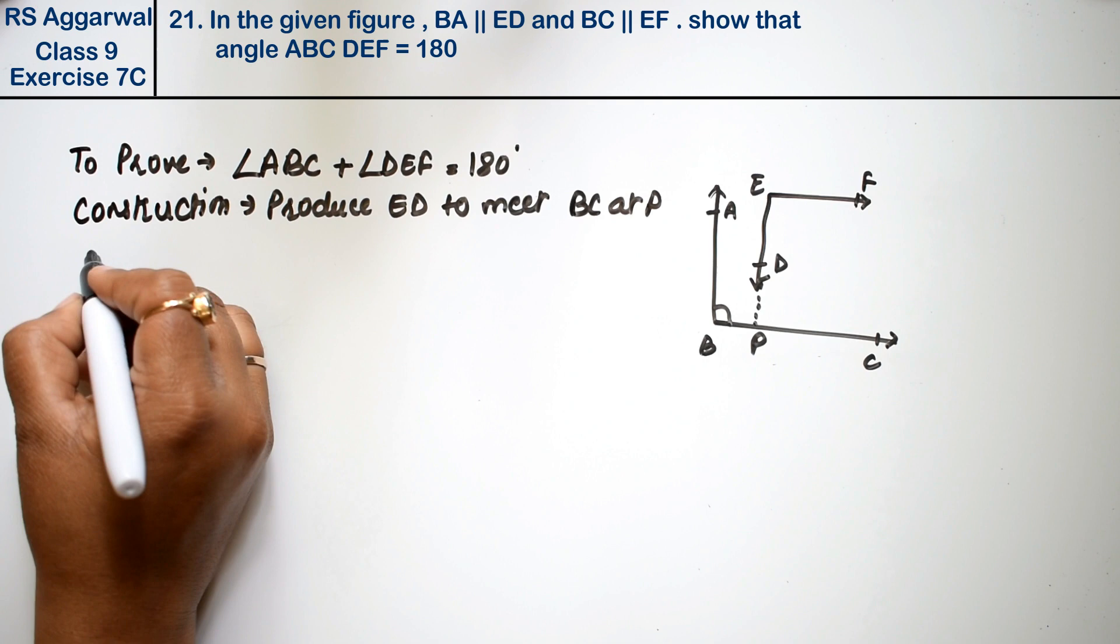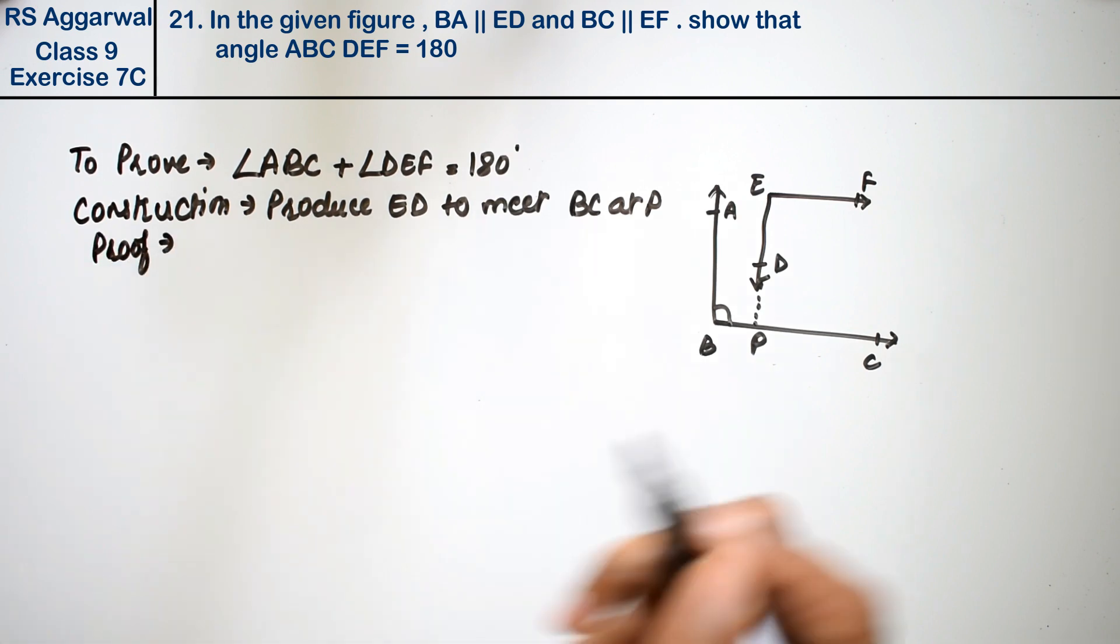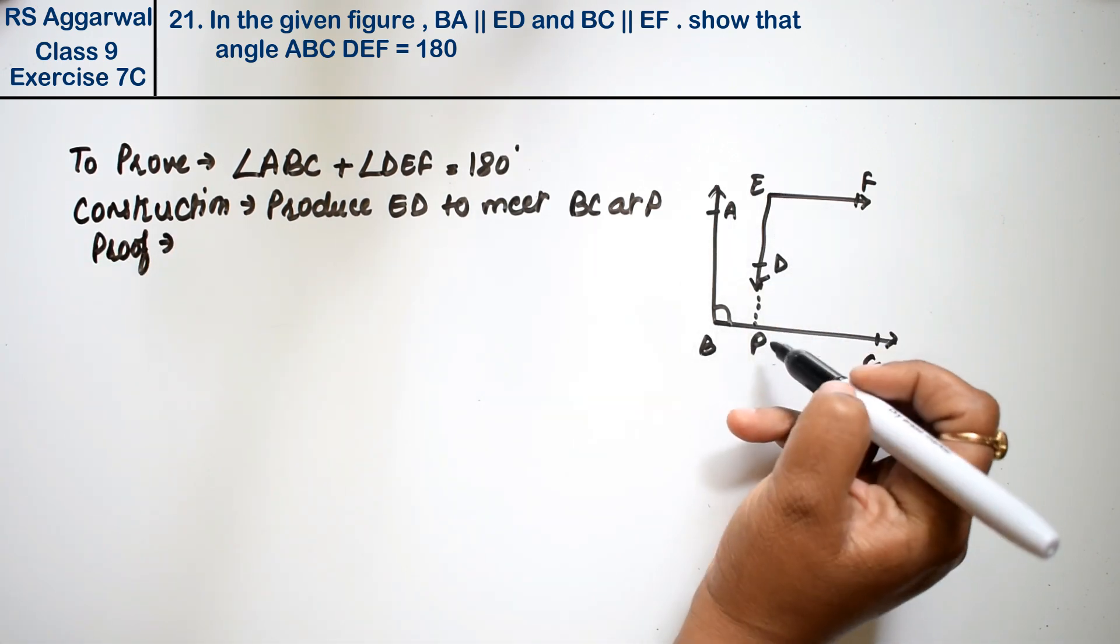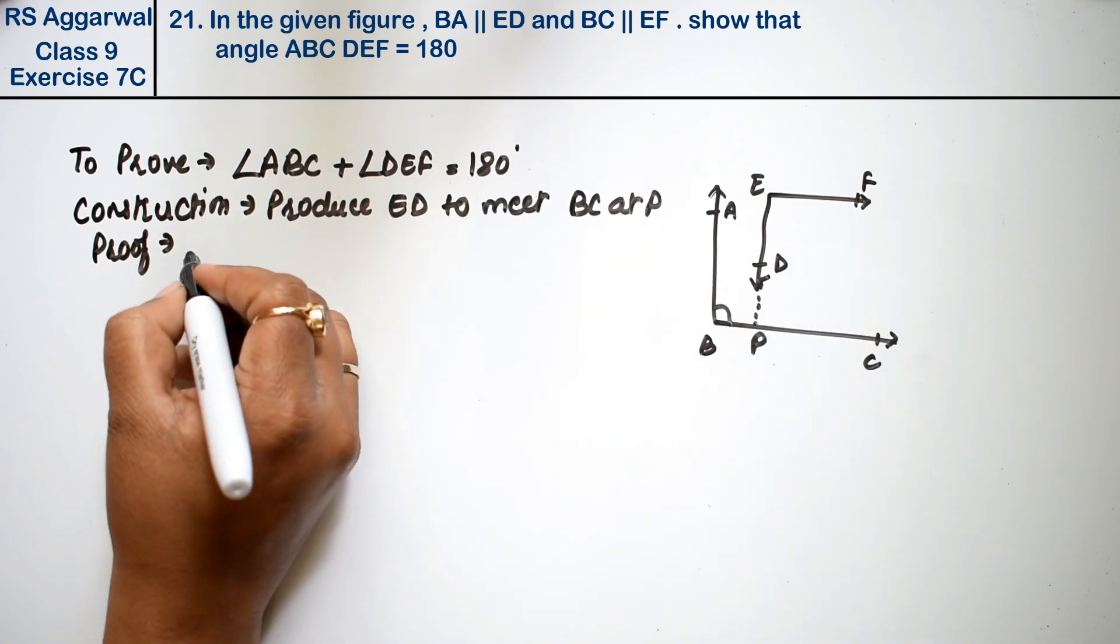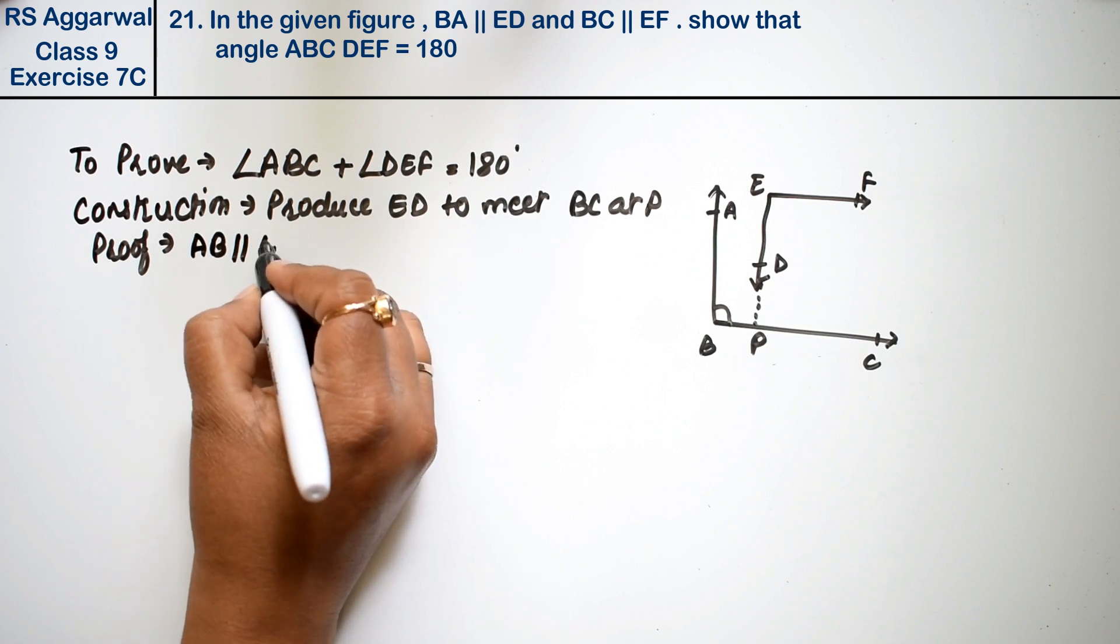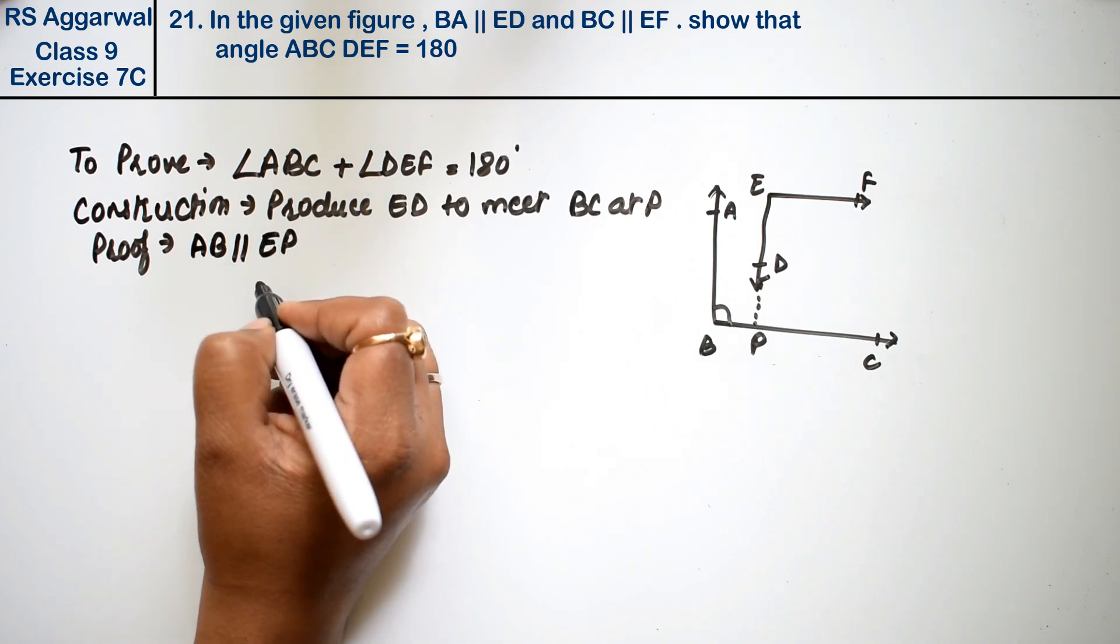Now let's prove. We know AB is parallel to EP.